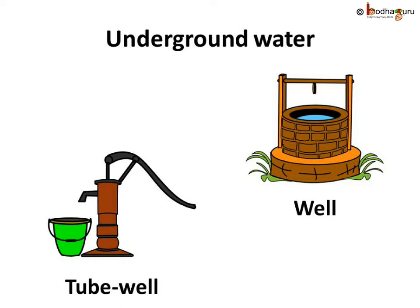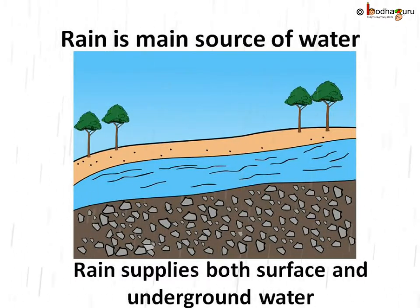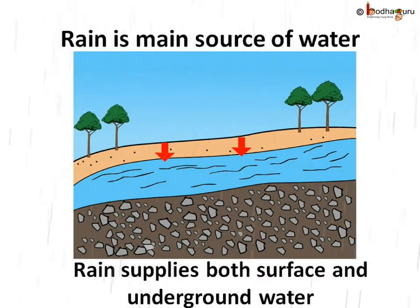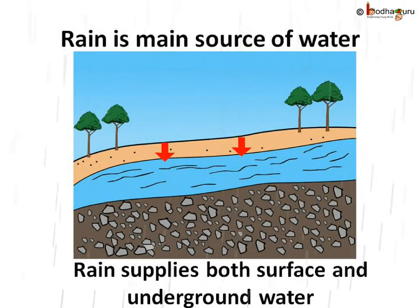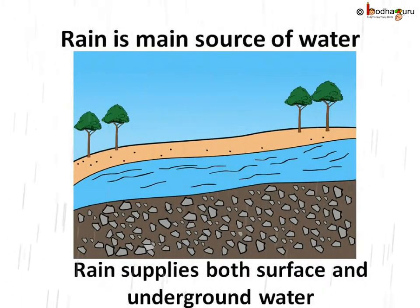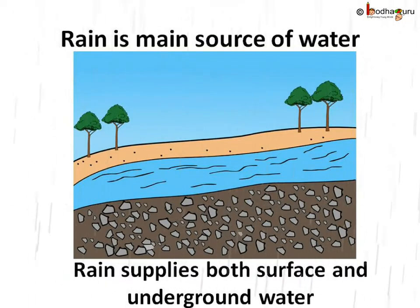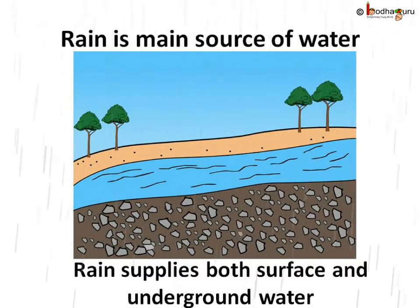But have you wondered how does the water go underground? Is there an unlimited amount of water underground? No. When rain falls on the ground, a part of the rainwater seeps through different layers of soil and reaches underground. If we dig deep enough, we would reach a level where all the space between particles of soil and gaps between rocks are filled with water. This topmost level of underground water is called the water table. When rainwater seeps through different layers of soil, it gets filtered several times, hence the underground water is free from dirt and is drinkable.